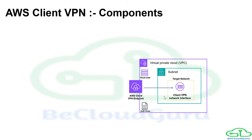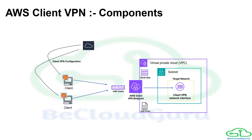Once you create the Client VPN endpoint, set up the target network, authorization rules, and route table, you also need to configure the client CIDR range — the IP range from which IPs will be assigned to clients. The end user needs a client VPN configuration file, which you download from the AWS management console. You also download the VPN client for your OS — Mac, Linux, or Windows — and install it on the client machine.